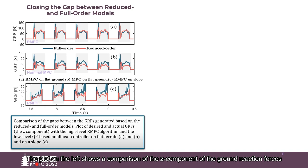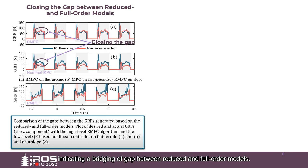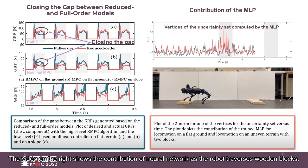Here, we present two case studies. The plot on the left shows a comparison of the Z component of the ground reaction forces generated based on both reduced and full order models. The data presented here is for the experiments on flat terrain and on slope. It can be noticed that RMPC produces ground reaction forces that are closer to those generated by full order model, indicating a bridging of gap between reduced and full order models. The video on the right shows the contribution of neural network as the robot traverses wooden blocks.